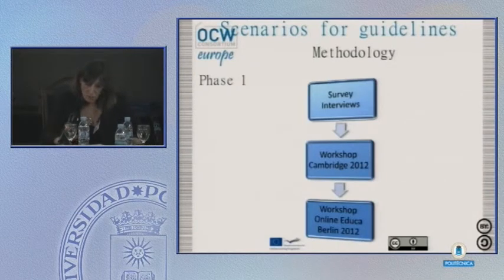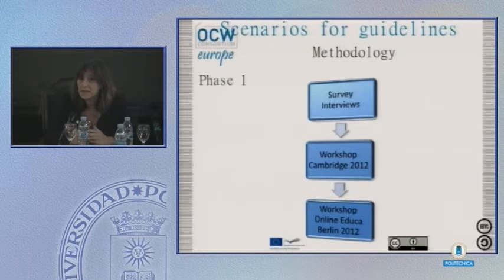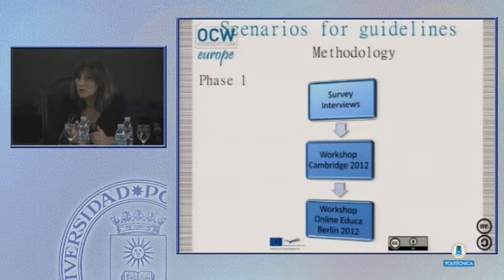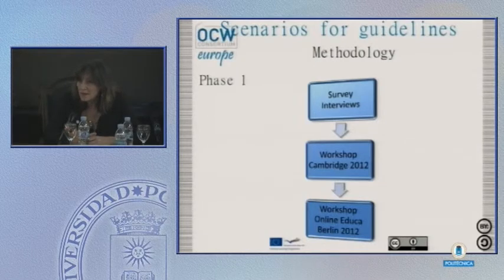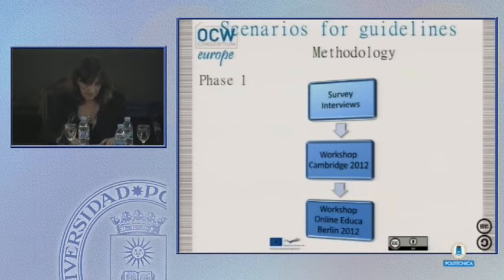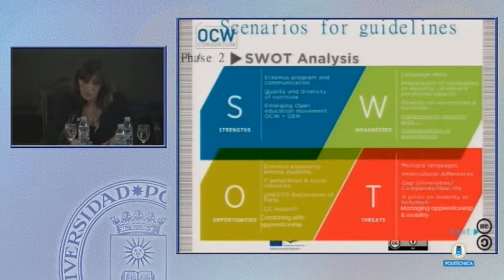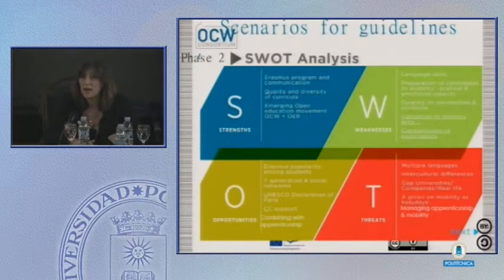To find the scenarios, the methodology in the first phase was to collect all possible scenarios we could imagine. We conducted surveys and interviews with international services staff, students, and teachers, and organized two workshops — at the Cambridge global open courseware conference in 2012 and at Online Educa Berlin in 2012. In the second phase, we started from a SWOT analysis of Erasmus mobility versus open courseware to select the most relevant scenarios, because in the first phase we had approached 20 scenarios, which was too many.